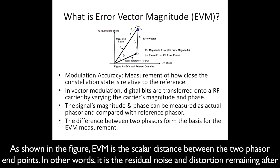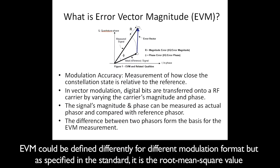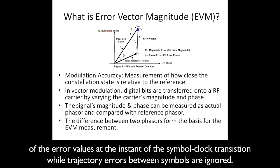As shown in the figure, EVM is the scalar distance between the two phasor endpoints. In other words, it is the residual noise and distortion remaining after an ideal version of the signal has been stripped away. EVM could be defined differently for different modulation formats, but as specified in the standard, it is the root mean square value of the error values at the instant of the symbol clock transition, while trajectory errors between symbols are ignored.